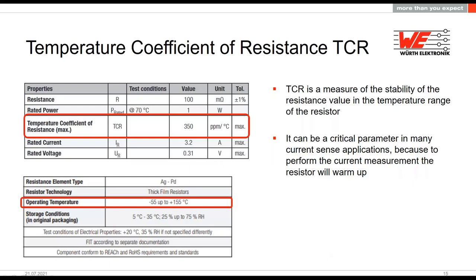Going further to the electrical specification, we will talk about the TCR — the temperature coefficient of the resistance. It is an important parameter for current sense resistors, even if it is widely ignored for resistors in general. In most electronic components, the electrical characteristics vary with temperature, and conductivity of the material is one of the properties with a high temperature dependency.